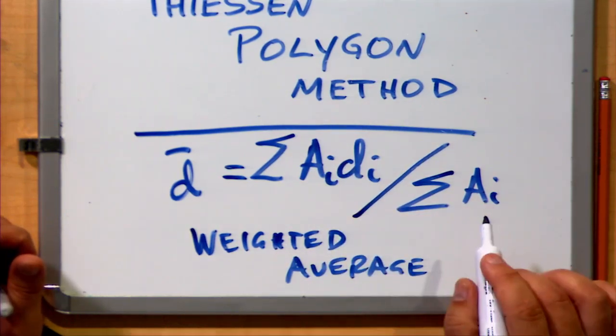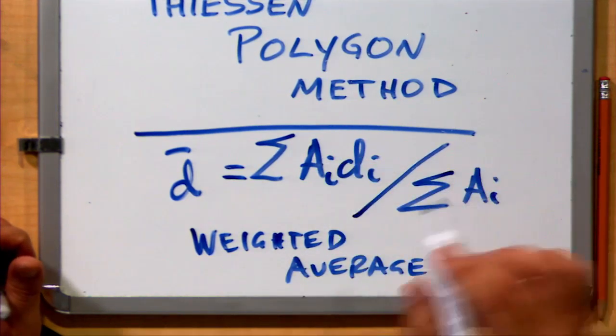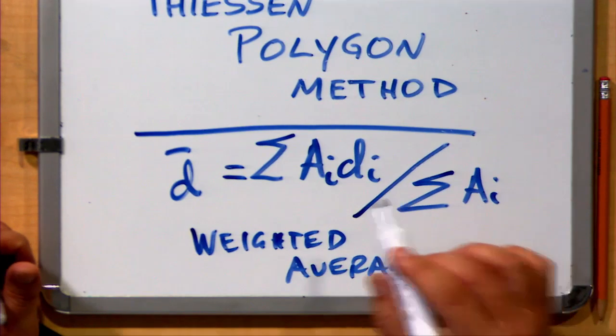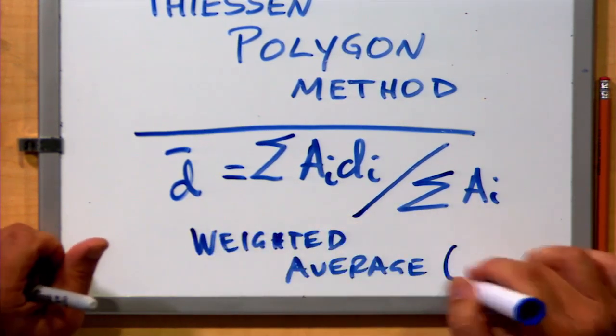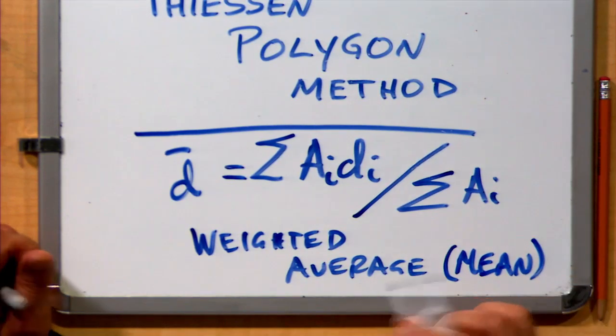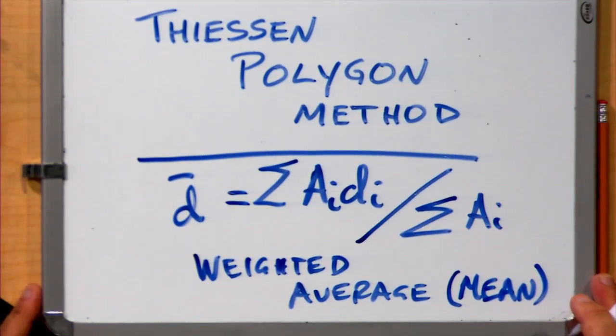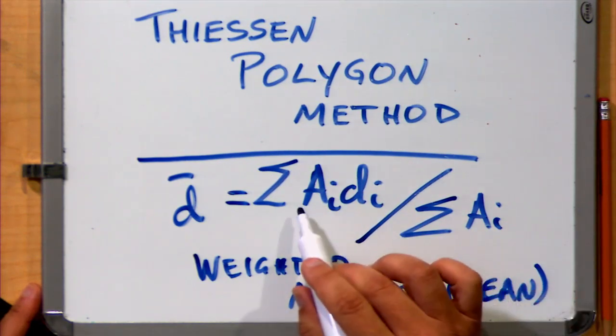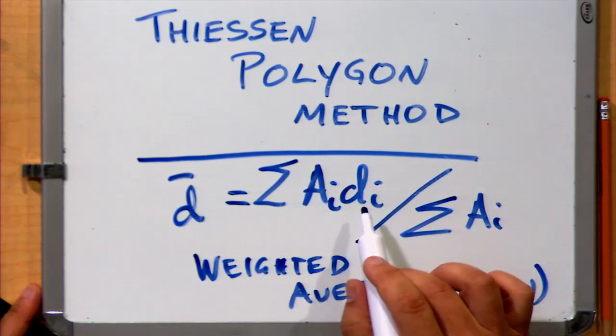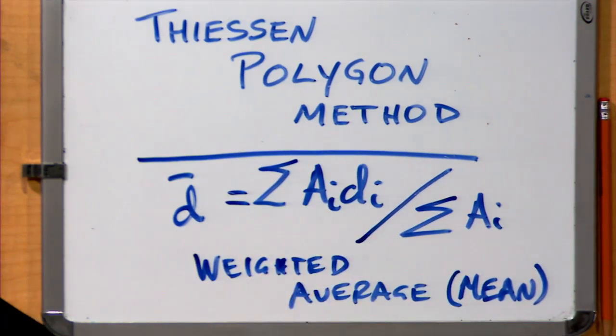And when we do so, that's going to give us something. Our area units are going to cancel out, and it's going to give us a depth. And that depth is a weighted average or a weighted mean of depths over the area. And that's one of the typical uses of the Thiessen polygon method, is to establish some areas associated with another value, and then use that to determine a weighted mean based on the areas in the Thiessen polygons.